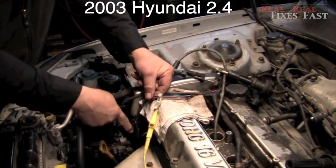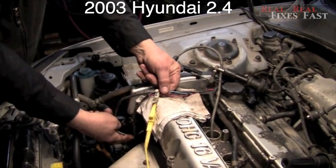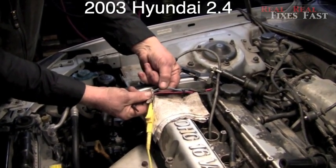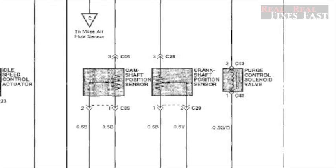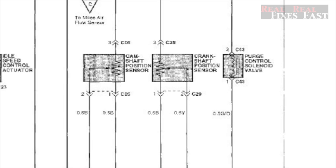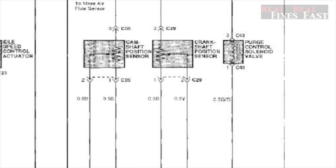We're going to use our lab scope and actually check the crank signal and the cam signal. Now our crank signal is mounted down in between the timing belt, but the wire comes up here. It's a three-wire sensor. If you look at the electrical diagram, there's power and ground and the signal wire.